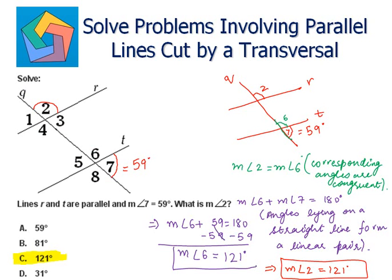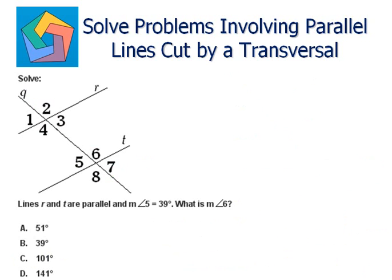Next problem. Solve. Lines are parallel and the measure of angle 5 is 39 degrees. What is the measure of angle 6? This is angle 5 and this is angle 6. Both are lying on a straight line, so they form a linear pair.